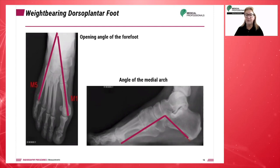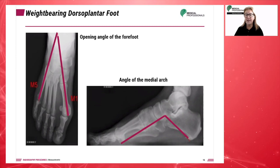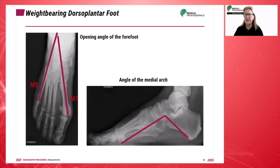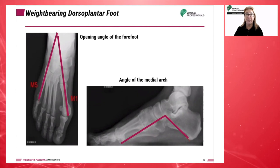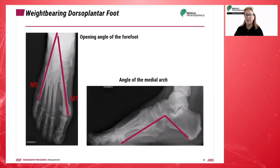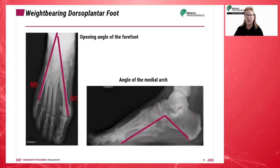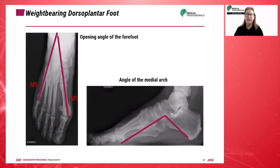On a weight-bearing lateral foot radiograph, we can measure the angle of the medial arch, or Jian Anwar angle. The angle is formed between the calcaneal inclination axis and a line drawn along the inferior edge of the fifth metatarsal. A normal angle is between 150 and 170 degrees. When the angle is greater than 170 degrees, the foot is considered flat. Whereas when it is less than 150 degrees, the foot is considered caved in with a high longitudinal arch.